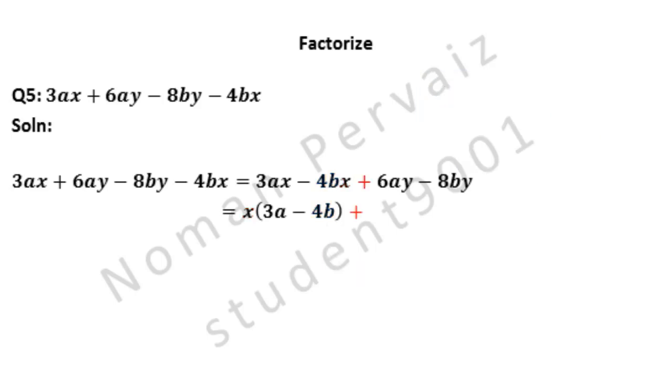Plus is written as it is. The table of 2 cancels both 6 and 8, so 2y is common in both these terms. 2y is taken as common. Since 2y is common, 3a will be left from 6ay, because 2 times 3 are 6, and a is written with it.